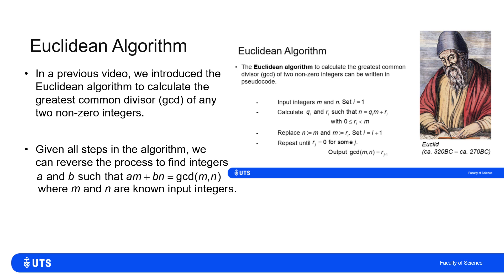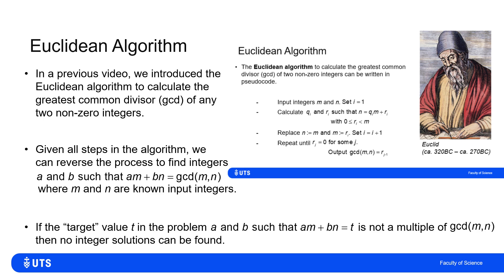What we do is we basically run the Euclidean algorithm and then we run it in reverse. This actually can help us find integers such that the linear sum of them gives the greatest common divisor. If my target is either the greatest common divisor or a multiple of that, then I can find solutions. If the target is not a multiple of the greatest common divisor, then I can't.